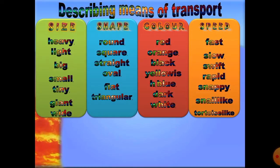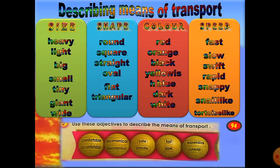For speed we can say fast, slow, swift, rapid, snappy, snail-like, or tortoise-like. On page 94 in your books you have special words to describe means of transport: comfortable and uncomfortable, economical, safe, fast, slow, expensive, and cheap — when it comes to consumption of gasoline or money.